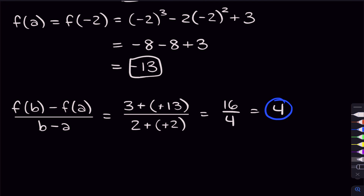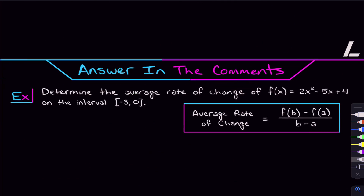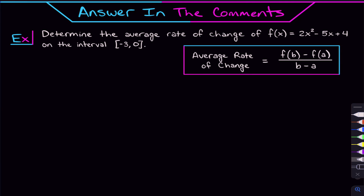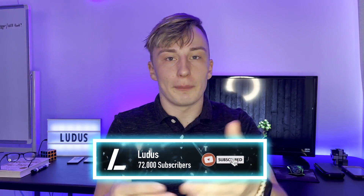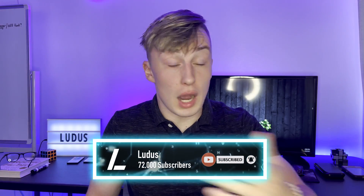Hopefully that gets you feeling a lot better with these average rate of change problems. Here is a problem for you to try and answer in the comments — determine the average rate of change of the function on the interval from negative three to zero. Let me know your answer in the comments, and if you have any questions, I'll try to get back to you. The notes for this video are linked in the description — they're free, so go snag them. Make sure you're subscribed to the channel, like the video, and I will see you soon.